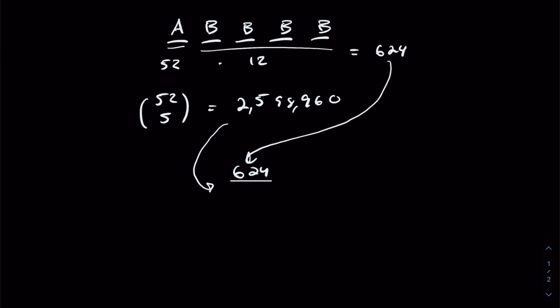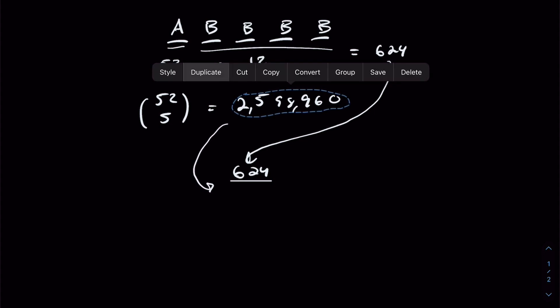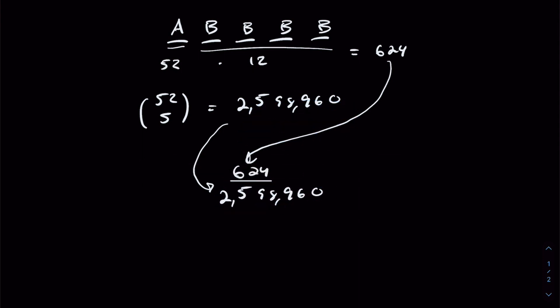Dividing 624 by 2,598,960 gives our resultant probability, which is equal to 0.024% — two hundredths of a percent. It's very unlikely if you're just drawing five random cards from a deck to end up getting a four of a kind. We'll now proceed to verify this with code to see if it really is as unlikely as the theory shows.